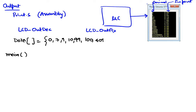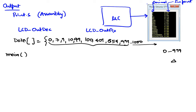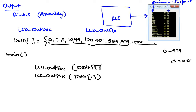The data array contains values like zero, seven, nine, ten, ninety-nine, one hundred, four hundred nine, five hundred sixty-five, four hundred ninety-nine, and so on. Some of these values are considered valid and others invalid as fixed point numbers, because our fixed point numbers are restricted to be between zero and nine ninety-nine. The main is really just making calls iterating through the array, calling LCD_out_dec and LCD_out_fix with data[i] as i goes from zero onward.